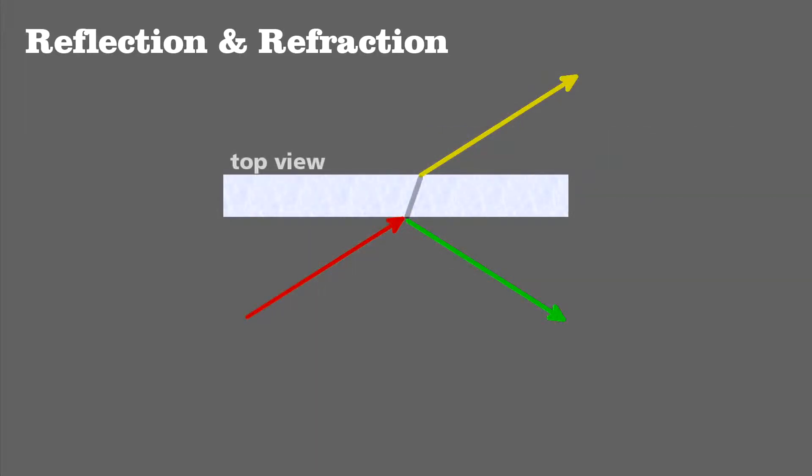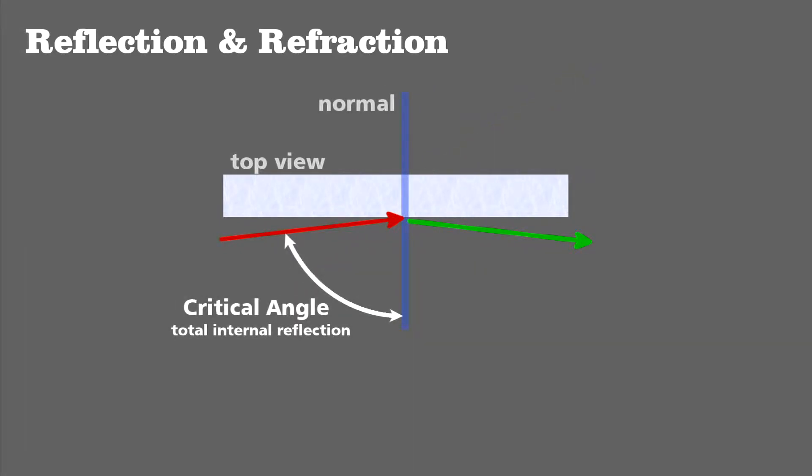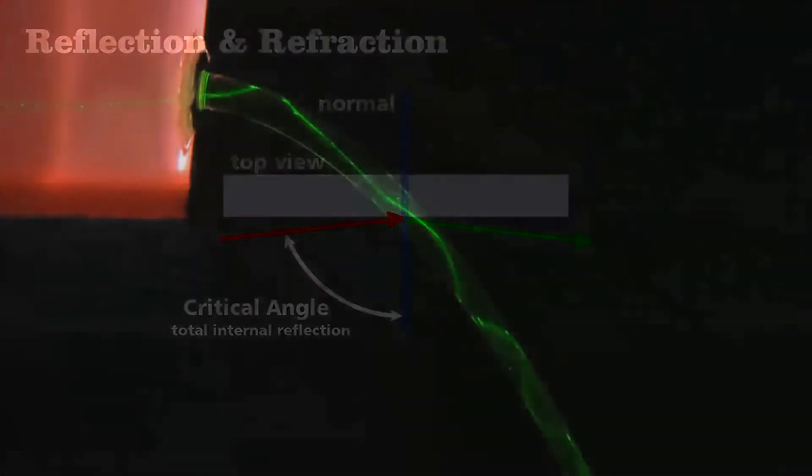Reflection and refraction can happen at the same time, but if a light ray hits the surface at an angle greater than the critical angle, it will be completely reflected and not refracted.